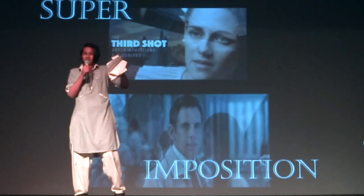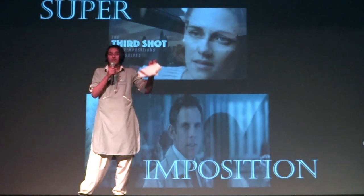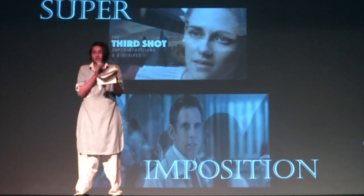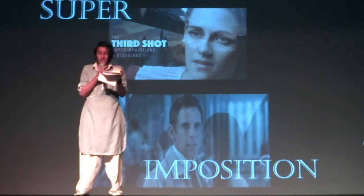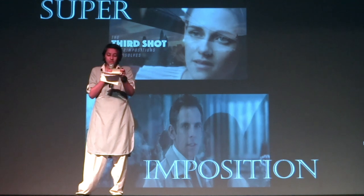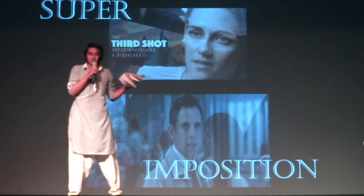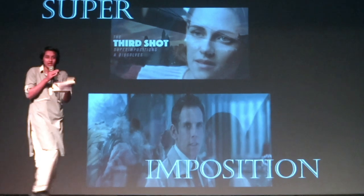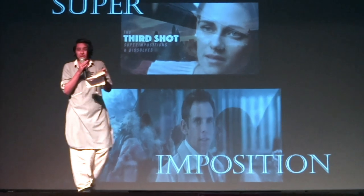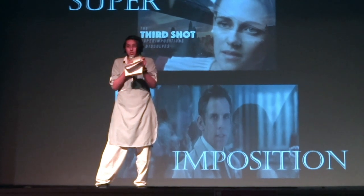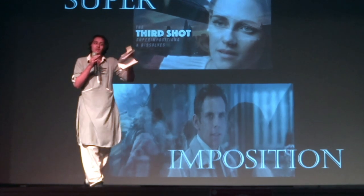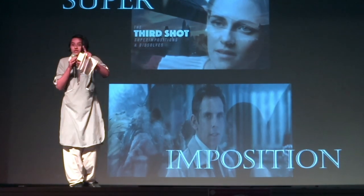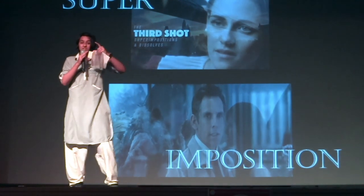Now let's talk about some technical methods — what visual effects are really about. The first one is superimposition, as you can see. It's basically two or more images taken together in one frame, put in such a way that they dissolve. This is used to show transitions, like avoiding a void when scenes are changing.